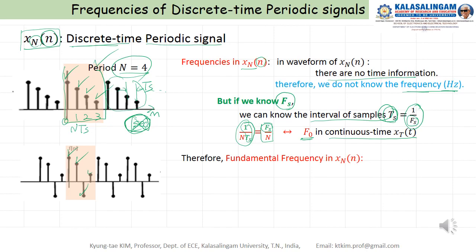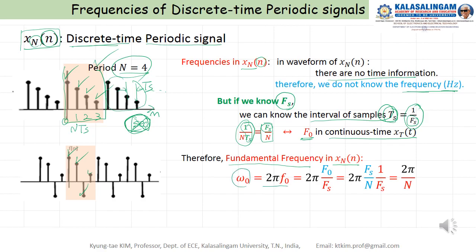It corresponds to the fundamental frequency F_0 in the continuous time case. Therefore, the fundamental frequency in x of n is omega_0 equal to 2·pi·F_0, where F_0 is the normalized frequency by sampling frequency. F_0 equals F_S divided by F_N. With F_S removed, we can get 2·pi divided by N. Therefore, the fundamental frequency within a discrete time periodic signal is 2·pi over N.